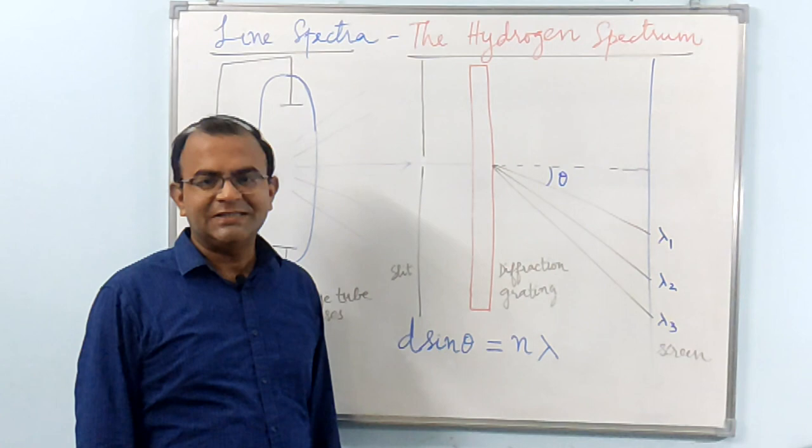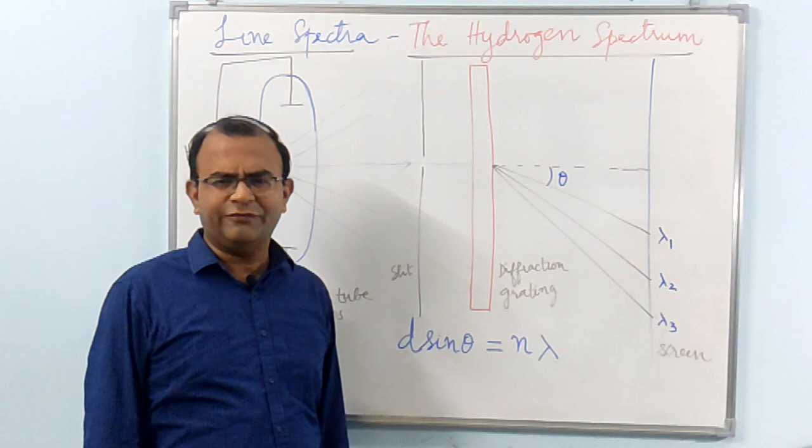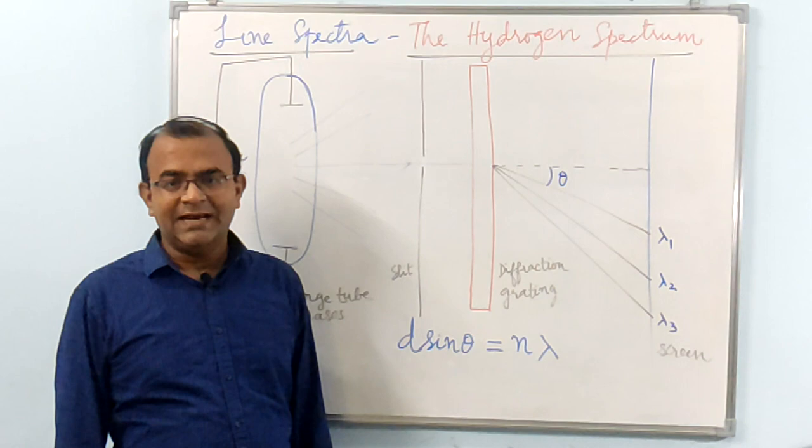Further improvements in the field of optics and possibility of production of better gratings with uniformly drawn fine lines led to obtaining better spectrum of elements. By the 1860s, Bunsen and Kirchhoff realized that the wavelength pattern in the spectrum is characteristic of the elements studied. Hence, it was possible to identify the composition of materials using spectroscopy.